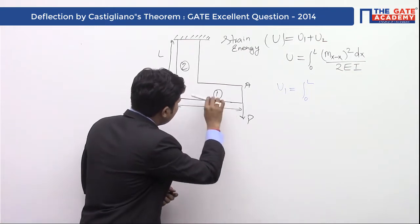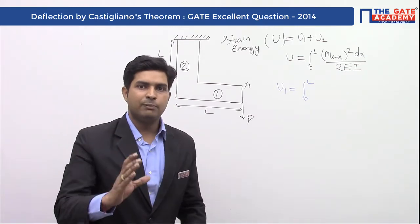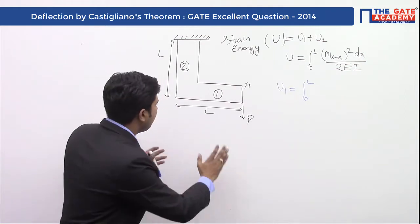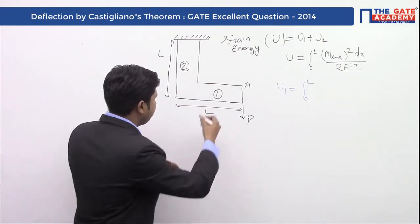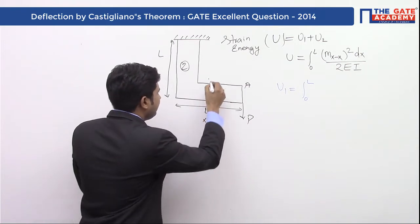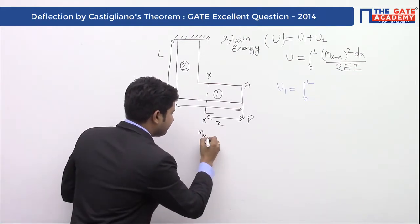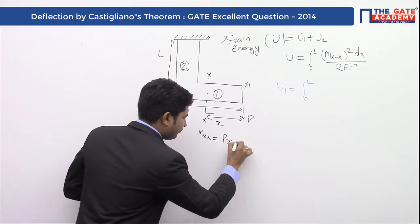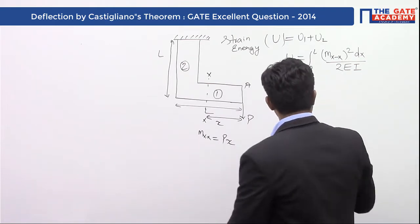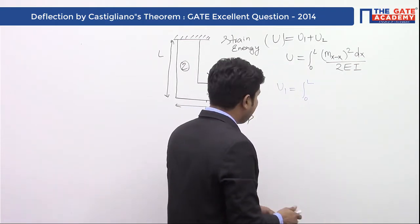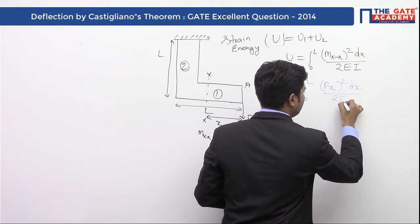For member one, the load P acts as a transverse shear load, and due to the transverse shear load the bending moment is varying in nature. For portion one, the bending moment will vary with respect to X. If we consider a section X at a distance X from point A, the value of bending moment Mxx equals P times X. So the bending moment is varying linearly as PX. We put the value of Mxx in the equation as PX squared dx divided by 2EI.